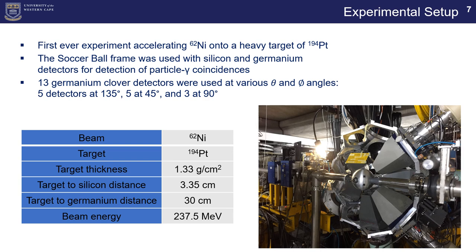We had the beam of nickel 62 with a target platinum 194. Target thickness for platinum being 1.33 gram per centimeter squared, and the target to the silicon distance is about 3.35 centimeters. Target to the germanium detectors, the distance being 30 centimeters, and the beam energy of 237.5 MeV.